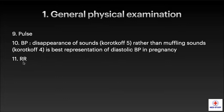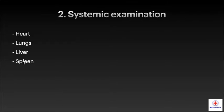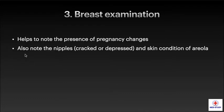We have to assess the respiratory rate of the woman. Moving to systemic examination, we have to check the cardiovascular system, respiratory system, per abdomen, as well as CNS briefly. For breast examination, note the presence of pregnancy changes, also note the nipples — whether they are cracked or depressed — and the skin condition of the areola.